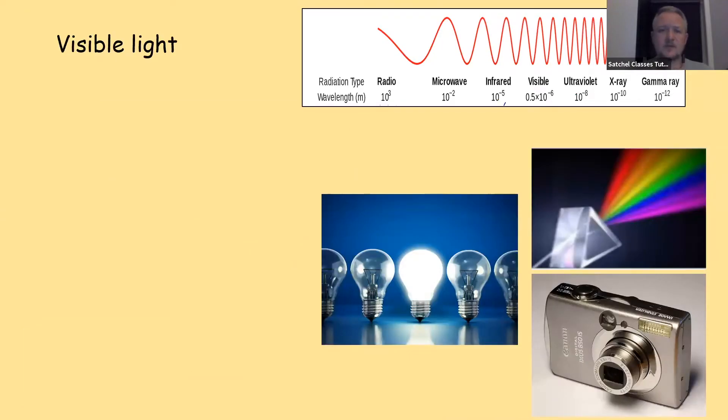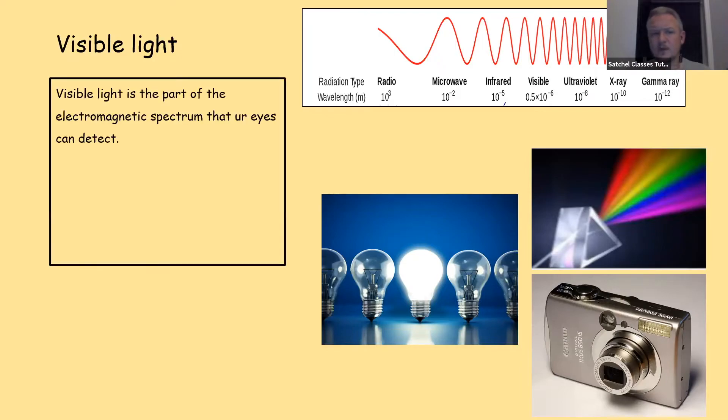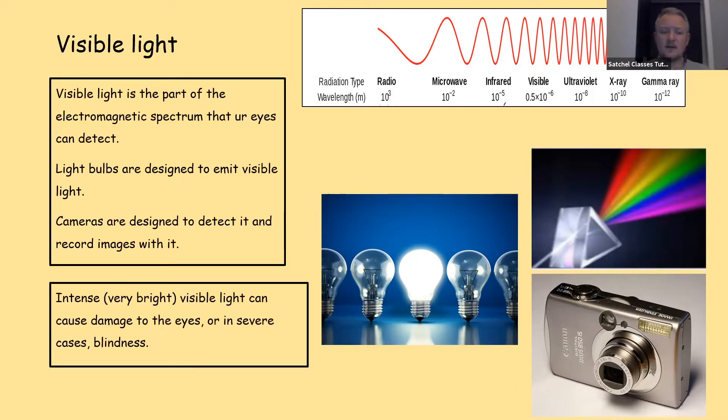Visible light. Visible light is our midpoint in the spectrum. Visible light is part of the electromagnetic spectrum that our eyes can detect. Light bulbs are designed to emit visible light. Cameras are designed to detect and record images with it. Visible light, most people think there are no dangers associated with it, but there is one. A very intense or very bright visible light can cause damage to the eyes or in severe cases blindness. It's one of the reasons you're taught from being a child don't look at intense radiation sources like the sun because the bright visible light can actually cause damage to your eyes. It's also the reason that people can suffer from what's called snow blindness in ski resorts. You tend to wear protection on your eyes because the snow reflects lots and lots of bright visible light back into the eyes and it can lead to temporary blindness.